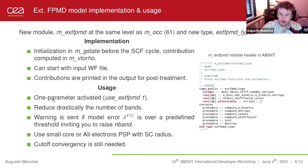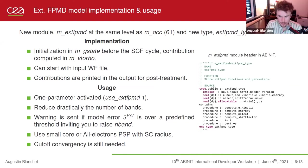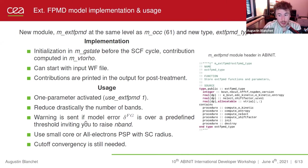A warning is sent if the error is over a predefined threshold. You also need to make sure to use small core or all-electron pseudo-potentials because core electrons will be impacted at high temperature. The cutoff energy convergence is still needed and can be pretty high due to the core electrons in the pseudo-potentials.